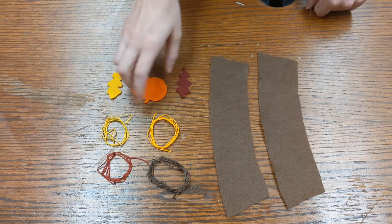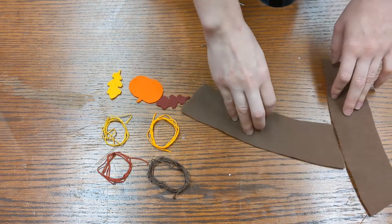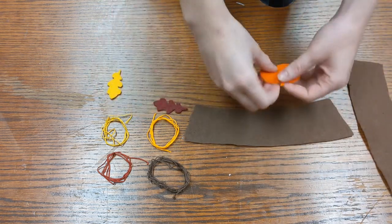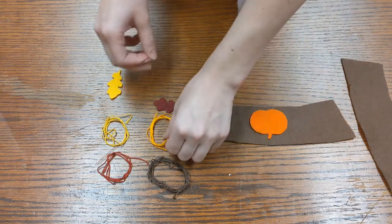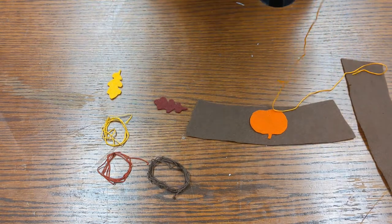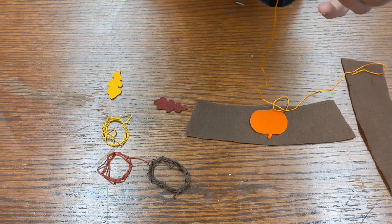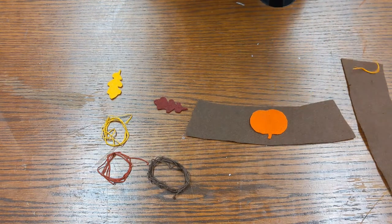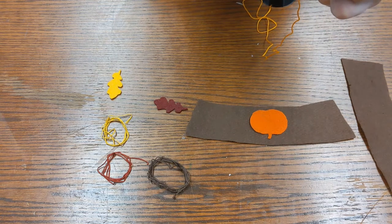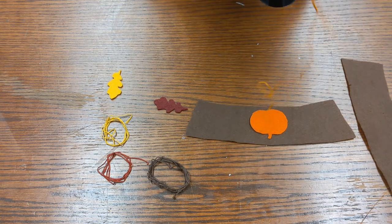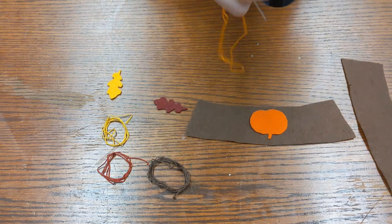To start we're going to put our decorations on one of the pieces. We'll start with the pumpkin, put that right in the middle, and then we are going to put our orange embroidery thread on the needle. Once you have it on there we're going to knot the end.